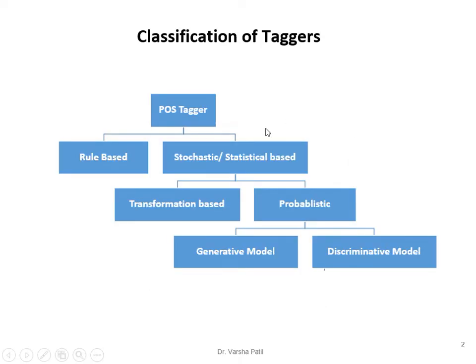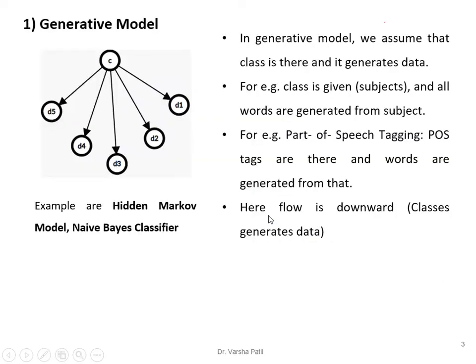In the second video, I already covered classification of taggers in detail. Classification of taggers is about the different methods by which we can unambiguously assign the part of speech tag to a word. Now here we are concentrating on the hidden Markov model, which comes under the generative model of probabilistic models.